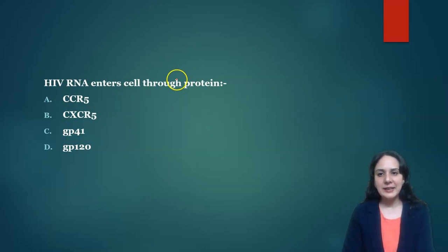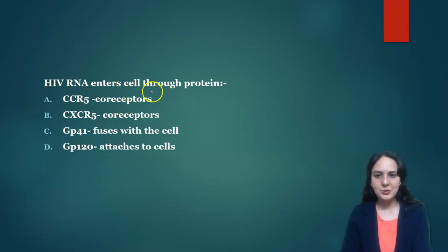Then: HIV RNA enters the cell through which protein? These two proteins are co-receptors, whereas GP120 is used by HIV RNA to bind to the cell, but to fuse and enter the cell it uses GP41 protein. So this is the answer. First are the co-receptors which help to bind HIV. GP120 attaches the cell and GP41 is required to fuse with the cell. So to enter the cell we need GP41.